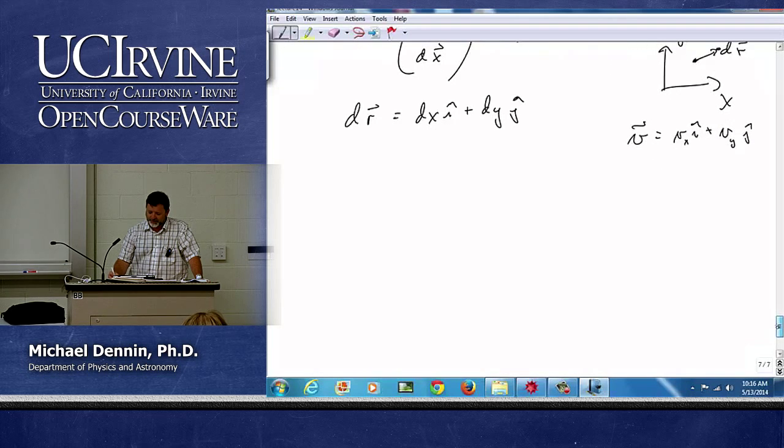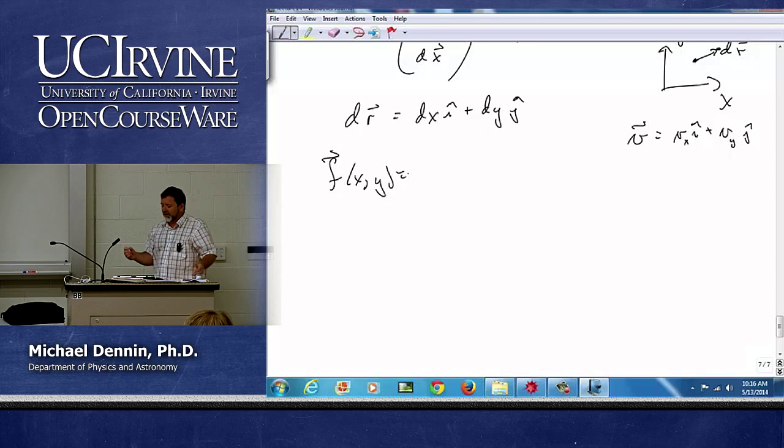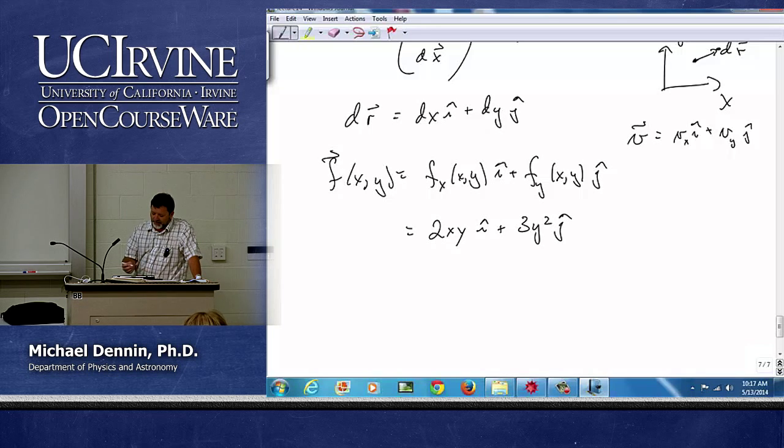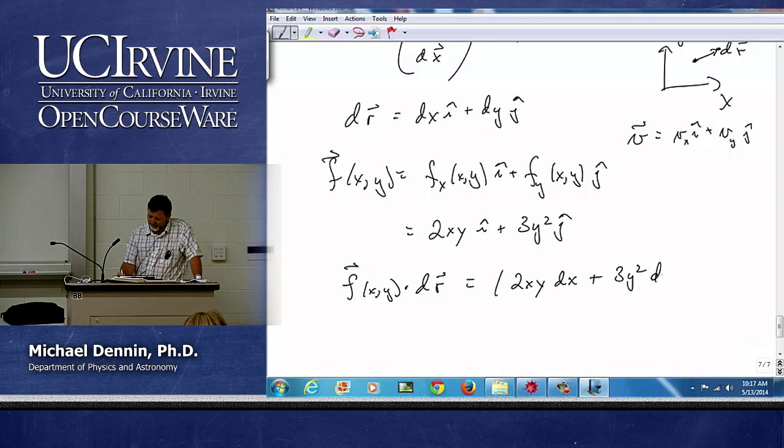So now let's imagine some vector function. And again, what does it mean to have a vector function? It means I have some fx of xy i-hat plus fy of xy j-hat. I'm going to just make one up. We're going to go 2xy i-hat plus 3y squared j-hat. And the nice thing is, by using component notation, the projection is easy. Right? It's 2xy dx plus 3y squared dy.